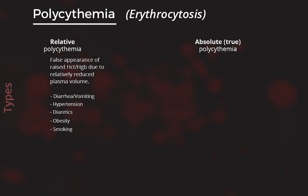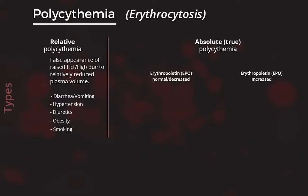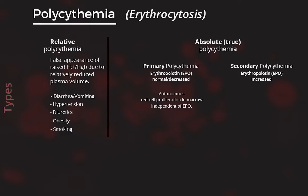Absolute or true polycythemia is a real increase in hematocrit or hemoglobin. In absolute polycythemia, the increased red cell production can be due to increased erythropoietin or without it. This brings us to classify absolute polycythemia into two types: primary polycythemia and secondary polycythemia. Primary polycythemia occurs due to red cell proliferation in the marrow autonomously without erythropoietin. This happens in certain hematological malignancies, most commonly polycythemia rubra vera. In polycythemia vera, a mutation in red cells makes its proliferation independent of erythropoietin-dependent signaling.